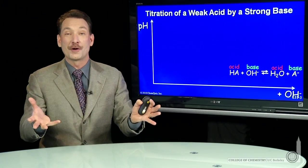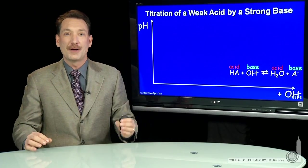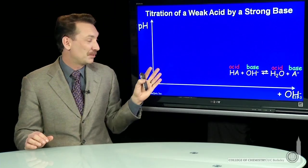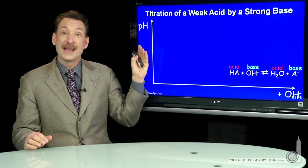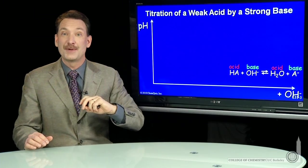The reaction of a weak acid with a strong base can be followed by a titration curve, where we plot the pH of the solution versus how much base we've added.